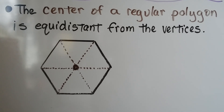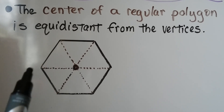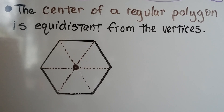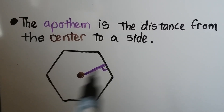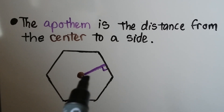The center of a regular polygon is equidistant from the vertices, so this center point is the same distance to every single vertex. This little line here is the apothem — the distance from the center to a side, not a vertex. See how it makes a 90 degree angle?